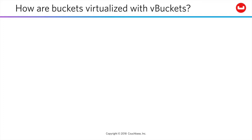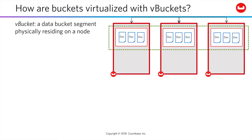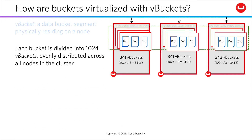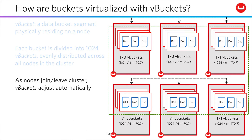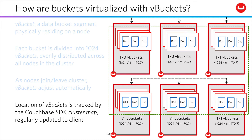Buckets do not exist on any specific node. They are virtualized across all data service nodes in a cluster through a mechanism called v-buckets, or virtual buckets. Each bucket is divided into 1,024 of these virtual containers, evenly distributed across all data service nodes. As nodes join, leave, or fail over within a cluster, the v-buckets are rebalanced. The location of specific v-buckets is tracked in a cluster map, which is regularly updated for all clients.